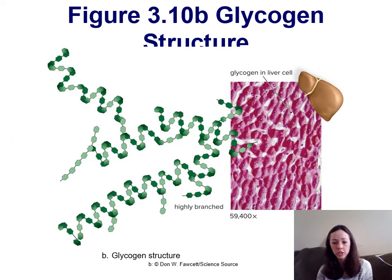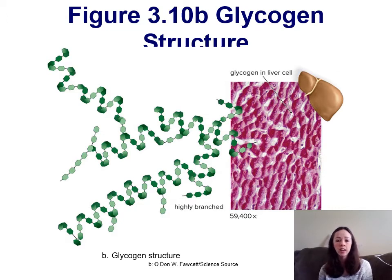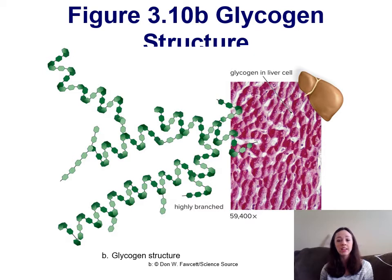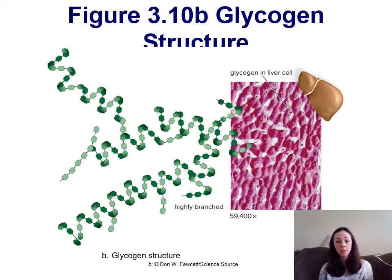Here is the chemical structure for glycogen — glycogen is what glucose is stored as within animals. Within humans, glycogen is stored within the liver and is used to help maintain our blood sugar levels in between meals. A hormone called insulin is released, which tells the liver to break down that glycogen and release glucose, so our blood sugar levels stay stable in between meals or if we go a long time without eating.